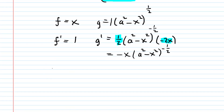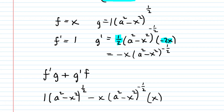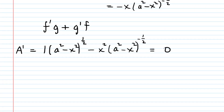We have all four components for the product rule. Using the formula F prime times G plus G prime times F: we take F prime (which is 1) multiplied by G (which is A squared minus X squared to the one-half), then add G prime. Be careful — you're adding a negative X, so you end up subtracting X times A squared minus X squared to the negative one-half, multiplied by F (which is X). Since we're multiplying X by X, those become X squared. That is our derivative A prime. Now, as noted earlier, we set our derivative equal to zero and solve for X — that's where the area will be a maximum.